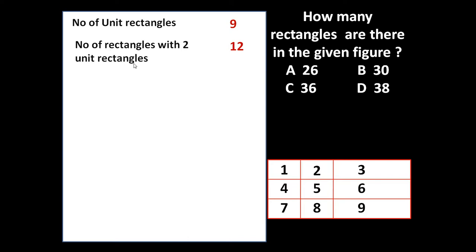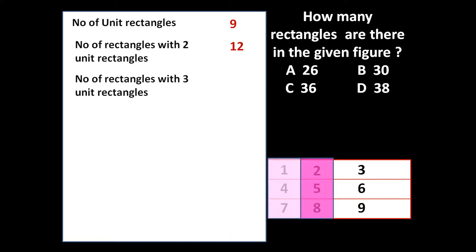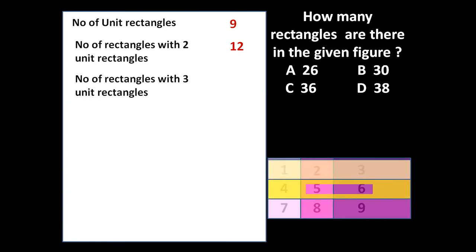The number of rectangles with two unit rectangles is equal to 12. Next, the number of rectangles with 3 unit rectangles: if I combine 3 rectangles together, a rectangle can also be formed. How many such rectangles with 3 unit rectangles can be formed? Number 1, number 2, number 3, number 4, number 5, number 6. So total 6 rectangles can be formed when three unit rectangles are taken together.